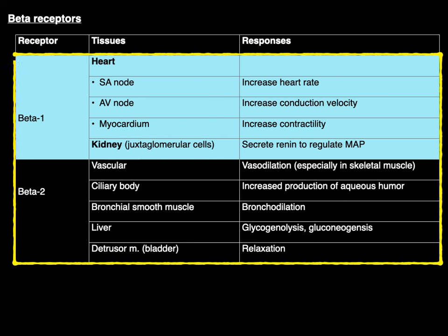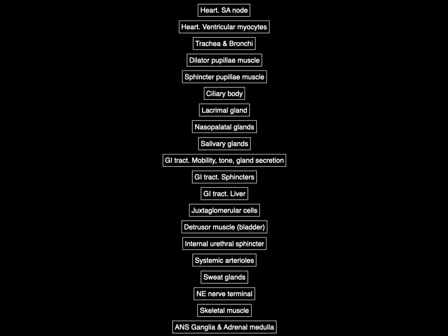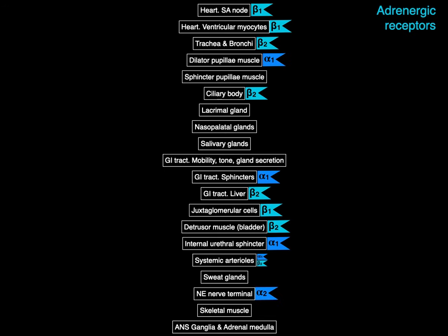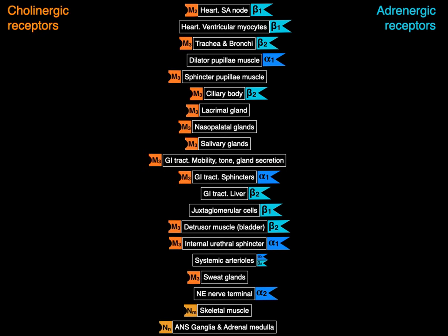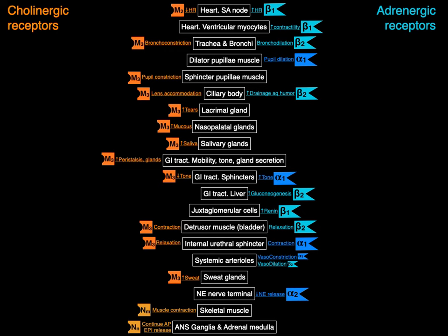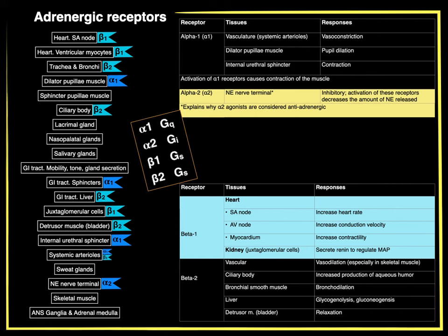So there are the beta-1 and beta-2 adrenergic receptors. Here are all the effector tissues we've talked about with the autonomics, some of which have different adrenergic receptors on them. Don't forget that many of them also have cholinergic receptors — depending on whether you stimulate with acetylcholine or epinephrine/norepinephrine, either way you're going to get some type of effect. And that is an overview of adrenergic receptors in a nutshell.